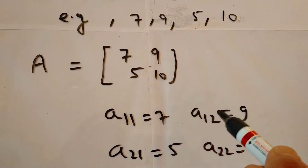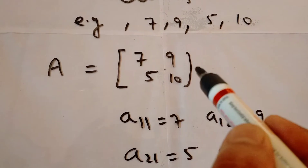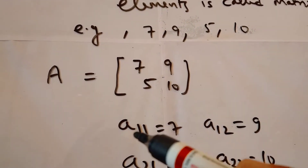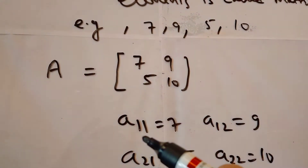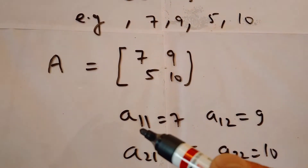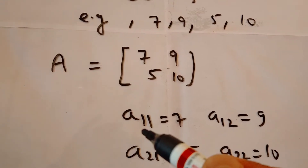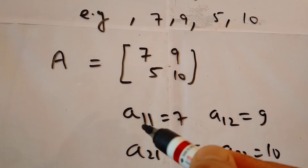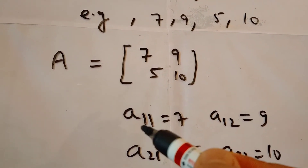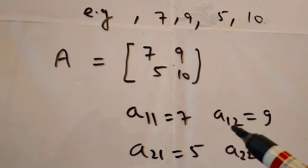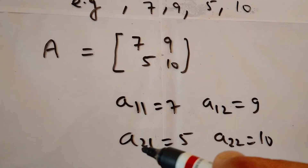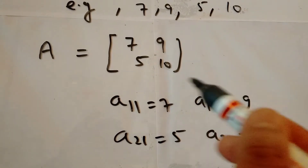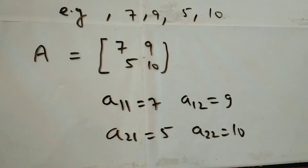Similarly, the second row, second column is ten. We represent the matrix with a capital letter, and the elements are always represented with a small letter along with their cell address. The address means row number followed by column number. For example, a₁₁ means first row, first column; a₁₂ means first row, second column; a₂₂ means second row, second column.